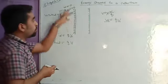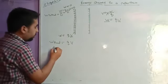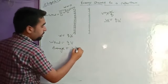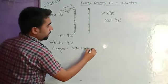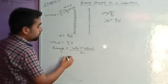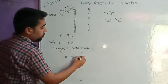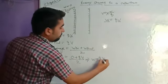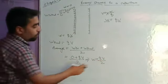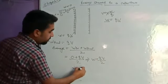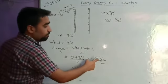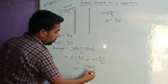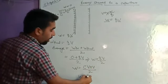So the total work done — we calculate the average work done. Initially it was zero and finally it was QV, so the average work done is (0 + QV) divided by 2, giving W = QV/2. Now substituting Q = CV, we get W = CV times V divided by 2, so W = half CV squared.